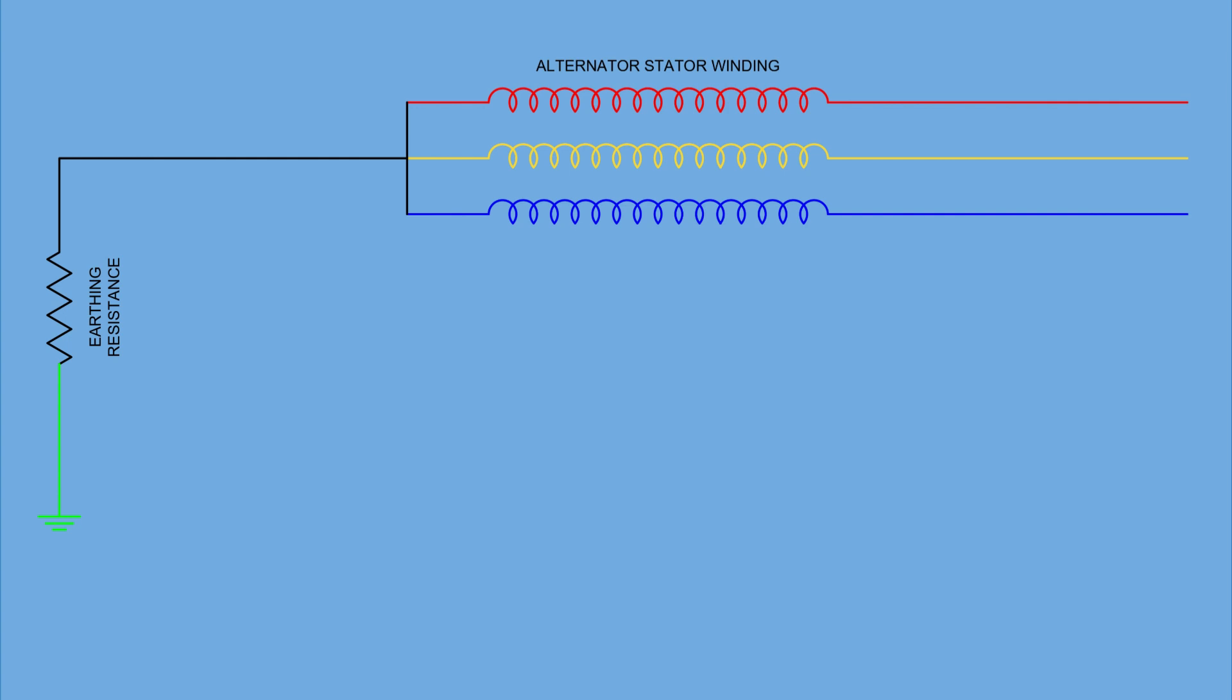This setup is for a three-phase alternator, and it uses three current transformers, one for each phase: R, Y, and B. These CTs are mounted on each line conductor, and their secondaries are connected in parallel.